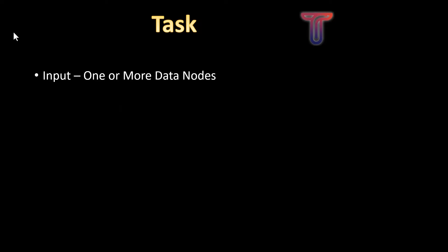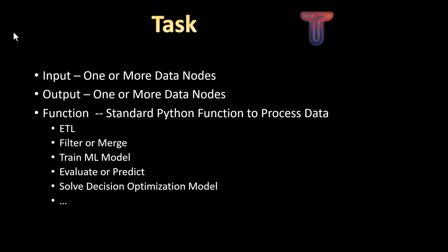A task takes one or more data nodes as inputs and produces one or more data nodes as outputs. It does that through a standard Python function. This can be ETL, filtering, merging, training an ML model, evaluating or predicting, solving a decision optimization model, or really any other type of data processing task.